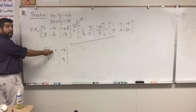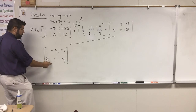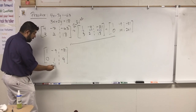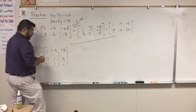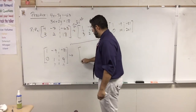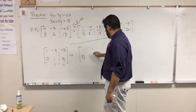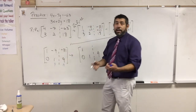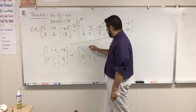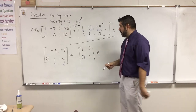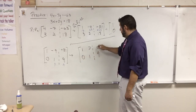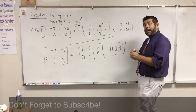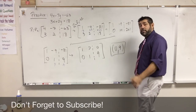Now I want to eliminate the negative 9 in row 1. I'll multiply row 2 by 9 and subtract: 0 times 9 is 0; 1 times 9 is 9; 9 times 9 is 81. So: 1 stays 1; negative 9 plus 9 is 0; negative 81 plus 81 is 0. Row 2 stays: 0, 1, 9. So our answer is x equals 0, y equals 9. That's it for augmented matrices!